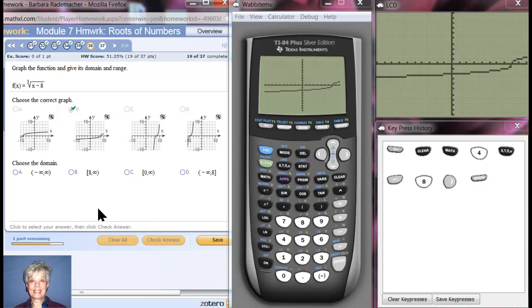And notice it goes to the left forever and you can't really see it. You'll have to take my word for it unless you change the window. This goes to the right forever and to the left forever. So the domain is going to be negative infinity to positive infinity. Fantastic!